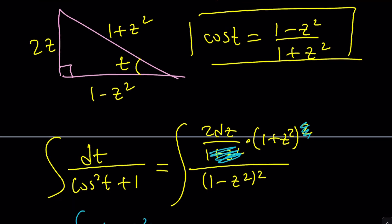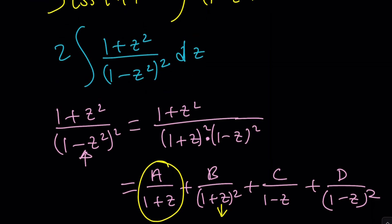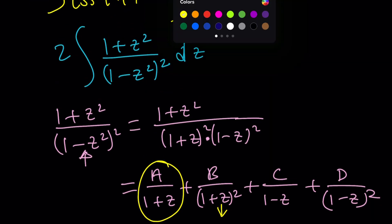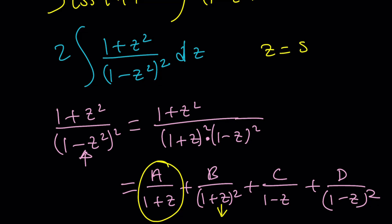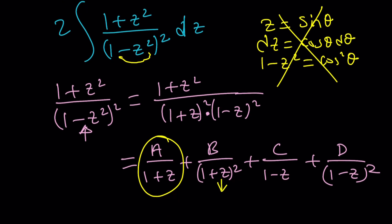Another alternative I was thinking about could be we could replace z with sinθ, and then dz would be cosθdθ. But 1 - z² is going to be 1 - sin²θ, which is cos²θ. And then when you square that again, it's going to give you cos⁴θ, which might cause a lot of trouble. So this is probably not a very good method.